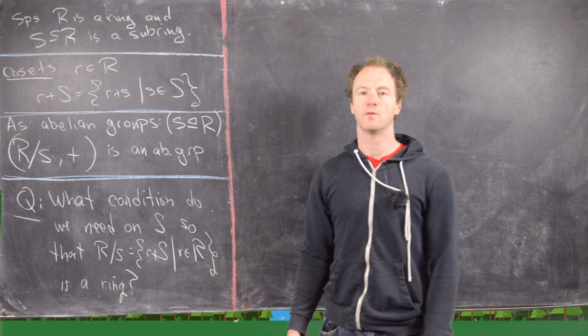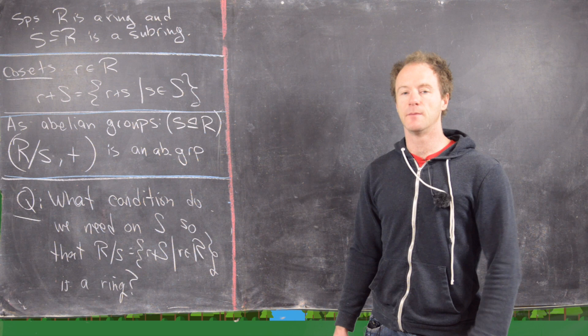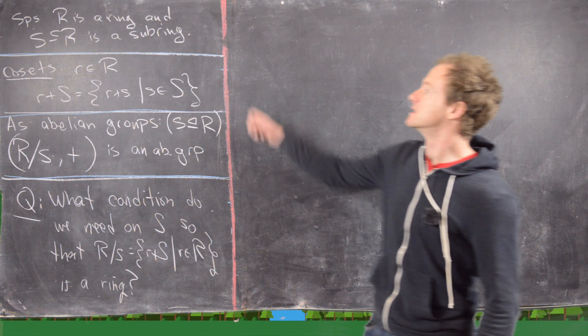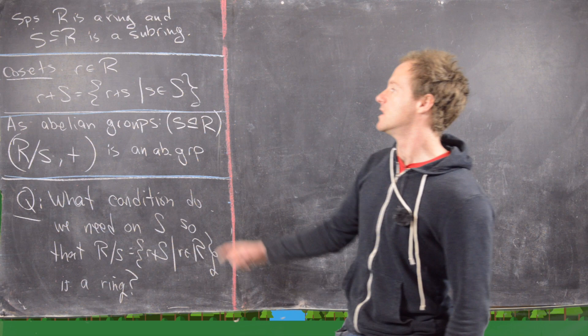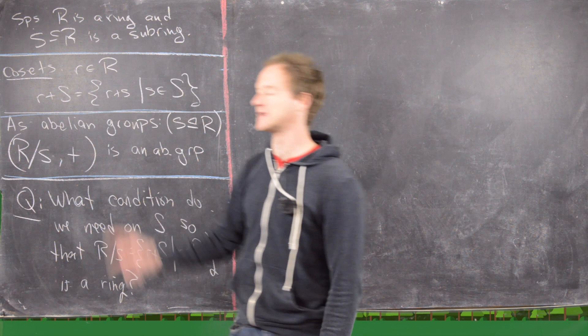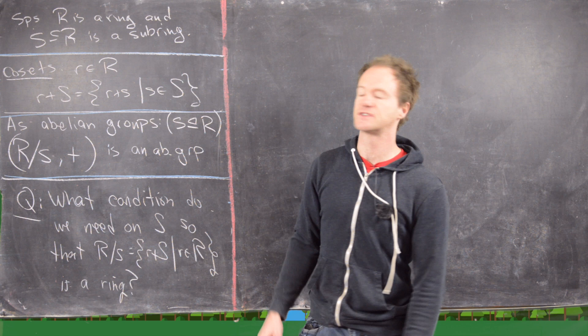In this video we want to talk about cosets of rings and quotient rings, building up to something like a normal subgroup but in the world of a ring. So let's suppose that R is a ring and S is a subring, and first of all we can define the cosets of S. The coset of S with representative r, denoted r plus S, is equal to all elements r plus s where s runs through all elements of that subring.